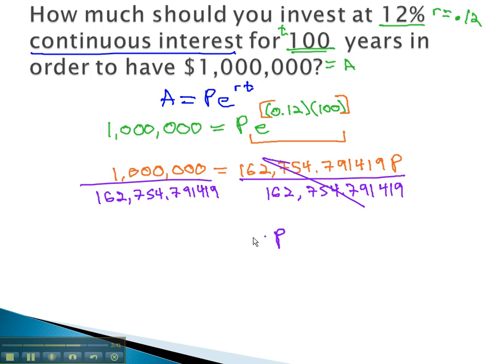This will isolate the principle and tell us how much money should have been invested 100 years ago, so that we would have a million dollars today. This investment is only $6.14, which has grown to over a million dollars.